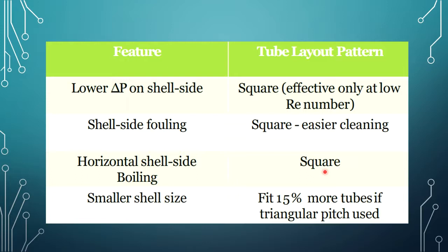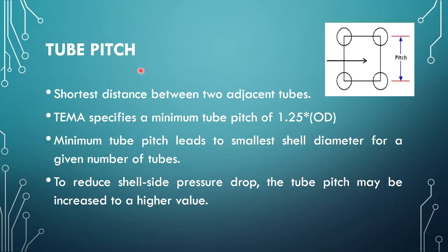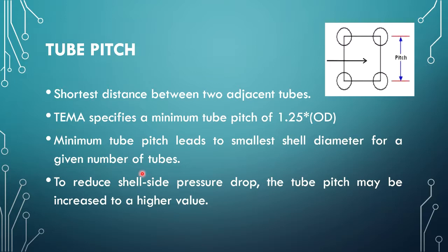Tube pitch is the shortest distance between two adjacent tubes. According to TEMA specifications, the minimum tube pitch is 1.25 times the outside diameter of the tubes. A minimum tube pitch leads to a smaller shell diameter for a given number of tubes. If we need to reduce the shell side pressure drop, tube pitch may be increased. Generally, the range of tube pitch is 1.25 to 1.5 times the outside diameter, and it may be adjusted according to shell side pressure drop requirements.